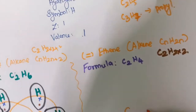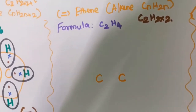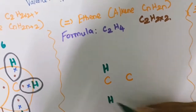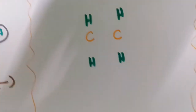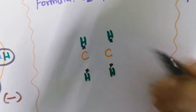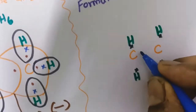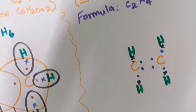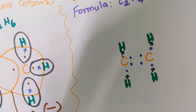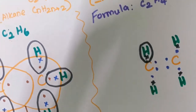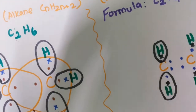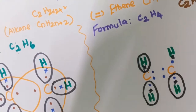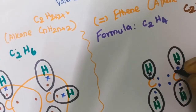How many carbons? 2 carbons. How many hydrogens? 4 hydrogens. We know hydrogen has only 1 electron in the outermost shell. Carbon has 4 electrons in the outermost shell. For my convenience I am going to write 1, 2, 1, 1 for each carbon's electrons. Each hydrogen will be fulfilled by getting 1 electron from the carbon.